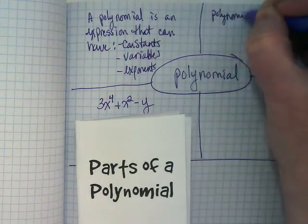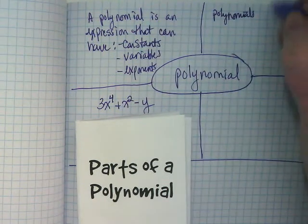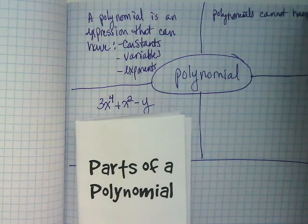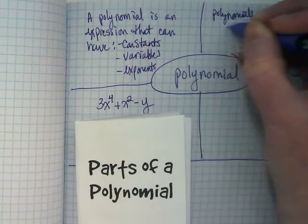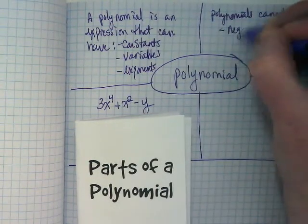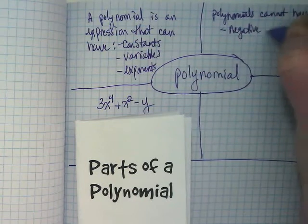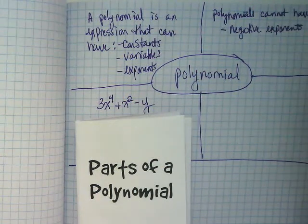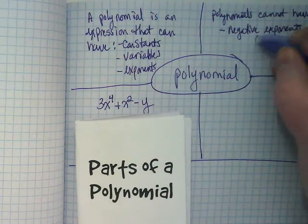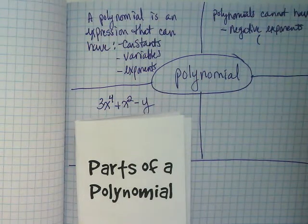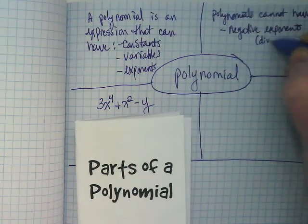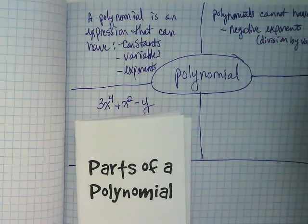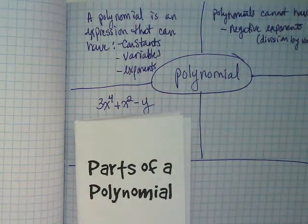Polynomials cannot have negative exponents. I did bring in tissue. It's on my desk in the back. Part of negative exponents can be what we call division by a variable. So you won't see that in a polynomial.